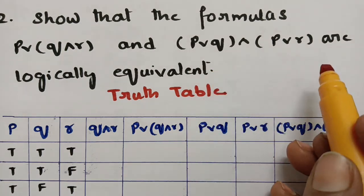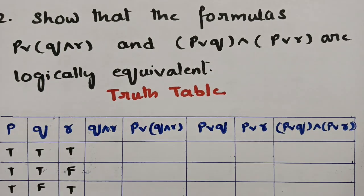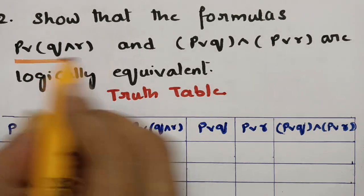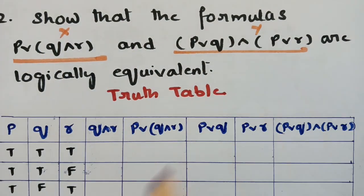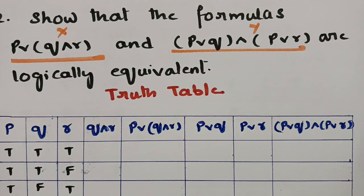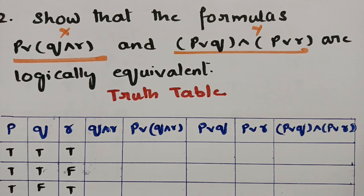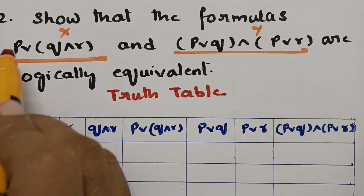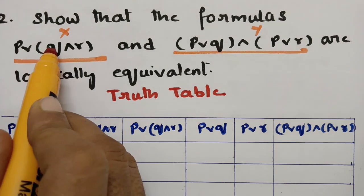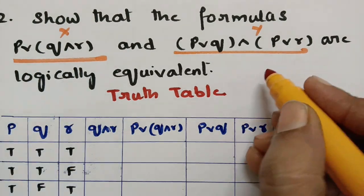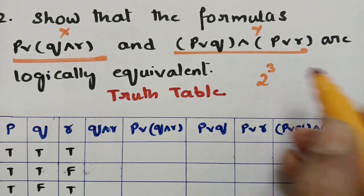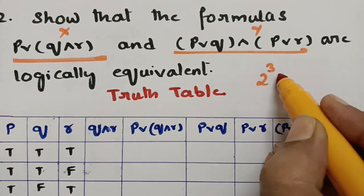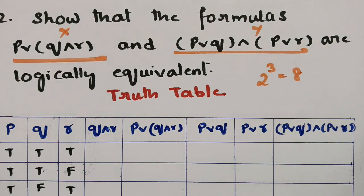In the next example, we show that p or (q and r) and (p or q) and (p or r) are logically equivalent. We consider the first formula as x and the second as y and compare their truth values. There are three propositions p, q, and r, so the number of possible truth values is 2^3 = 8.